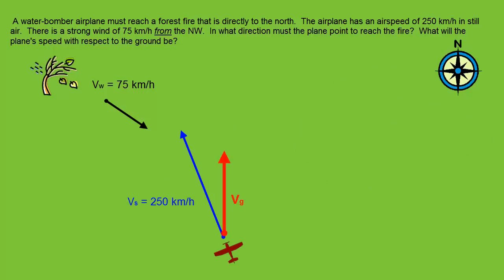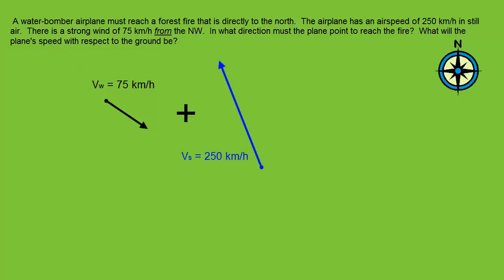In order for the plane to end up pointed directly north, it must point itself into the wind slightly in the direction shown by the blue vector. When these two vectors add together, the wind and the velocity of the plane in still air, we get a vector that's straight up and down, which we'll call Vg, or velocity with respect to the ground. That's the actual overall velocity the plane will have when the wind is combined with its still air velocity at that angle.